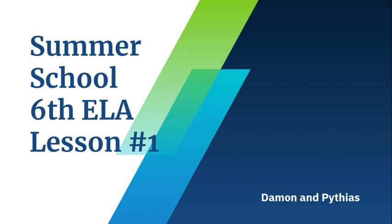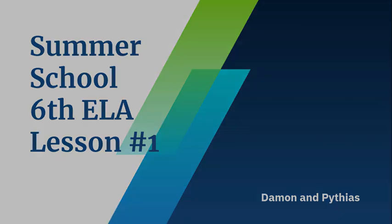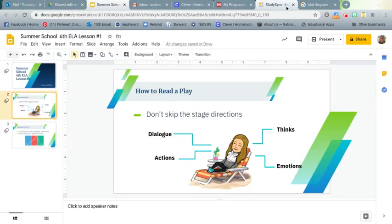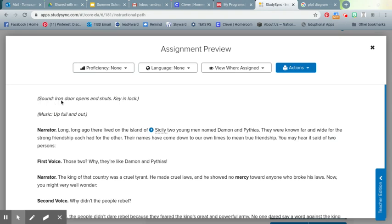We're going to review how to read a play a little bit better, because it's probably been a minute since you've read one in class. The first thing you have to know about when reading a play is that you cannot skip the stage directions. The stage directions in a play are those pieces we see in italics. In our story, we see right here: iron door opens and shuts, key in lock, music up full and out. These are all stage directions. Anytime you see that italicized — and often it's in parentheses — those pieces are not meant to be said aloud during the play.